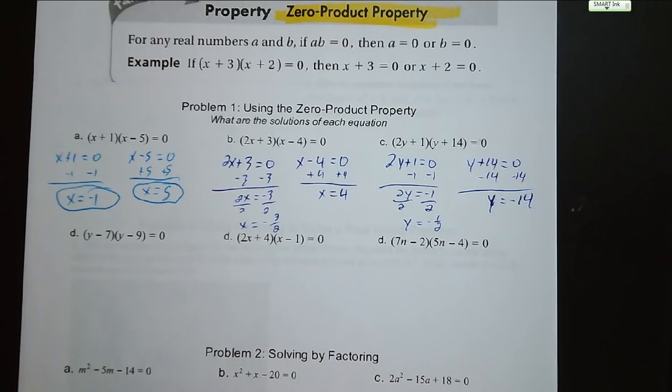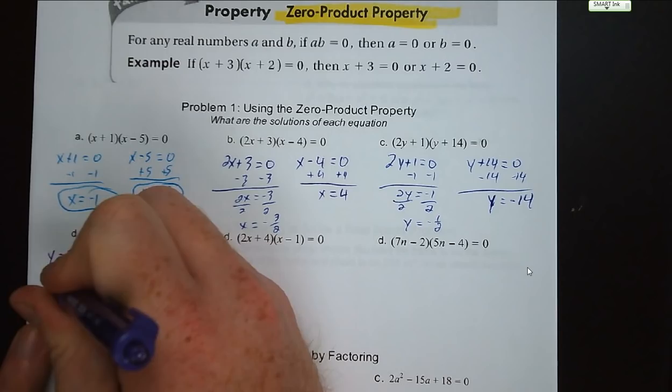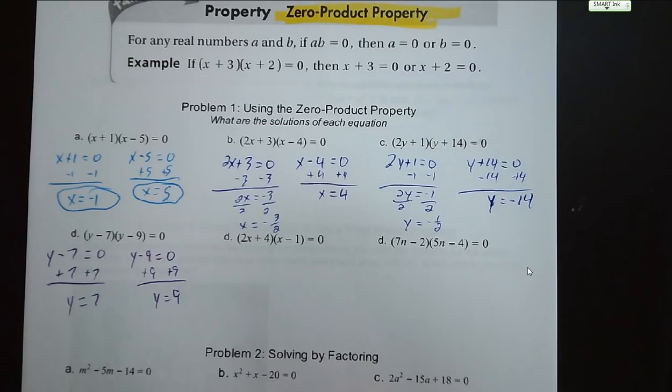I want you guys to try letter D on your own, and then I will go over it. So y minus 7 times y minus 9: separated into two equations, y minus 7 equals 0 gives y equals positive 7, and y minus 9 equals 0 gives y equals 9. So this is why we did all of that factoring.